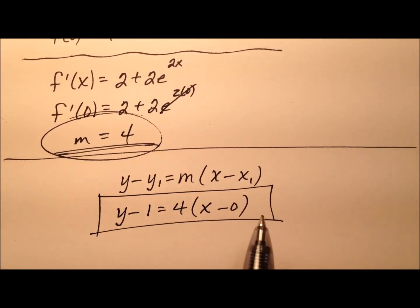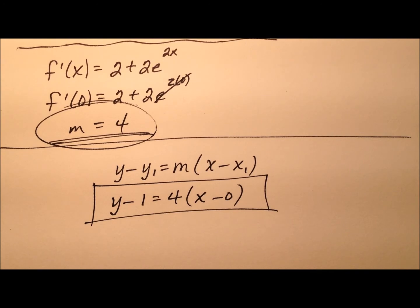This is the equation of the line in point slope form. We can easily convert this into slope intercept form by distributing the 4 and adding 1, giving us y equals 4x plus 1.